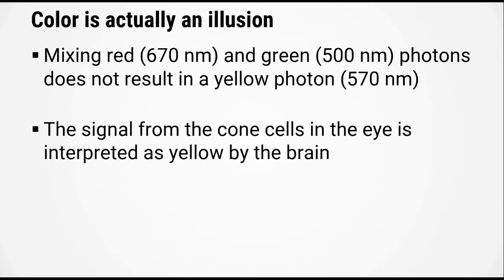The question now is how do we actually see color? It turns out that it's actually a little bit of an illusion. Mixing a red photon and a green photon does not actually result in a yellow photon. What we actually see is a signal from the cone cells in our eye. We have three different types of cone cells that preferentially respond to red, green, and blue. So when we see a red and green photon, the stimulation of those two cone cells gets interpreted as yellow by our brain — it's an illusion our brain creates.